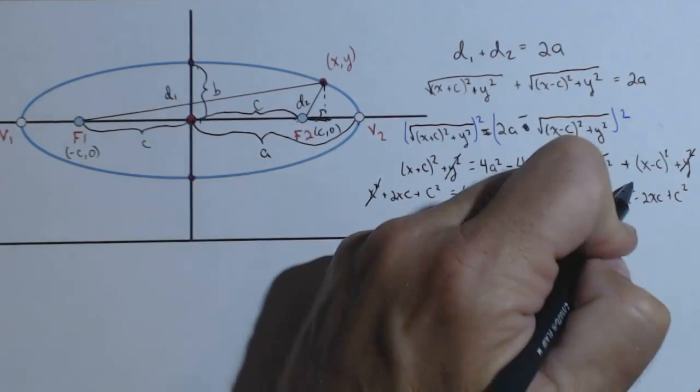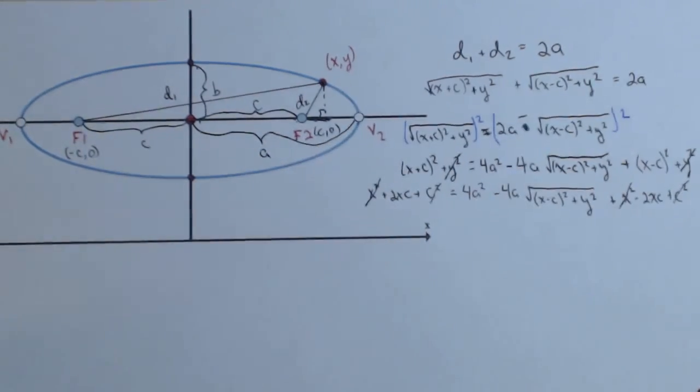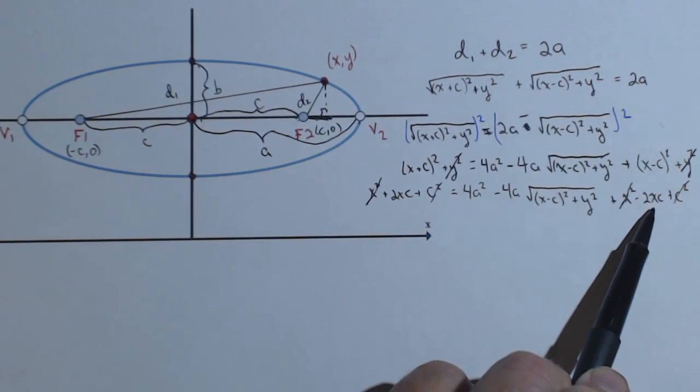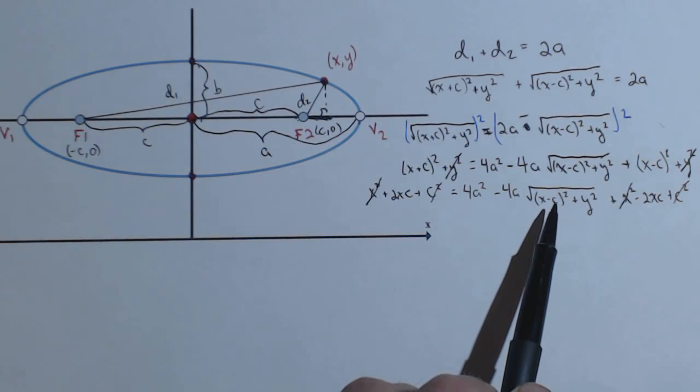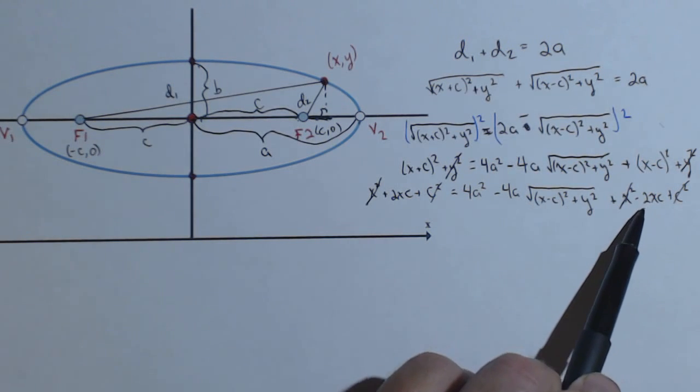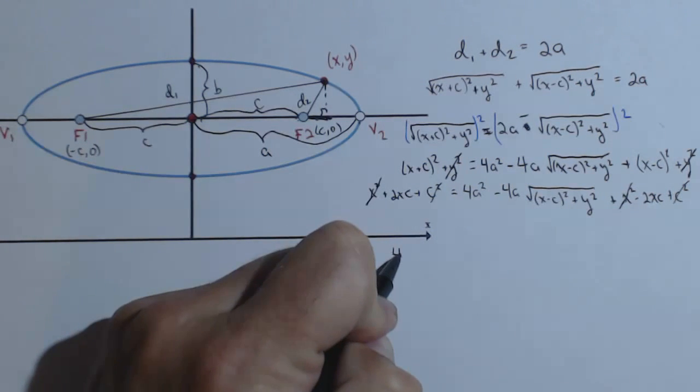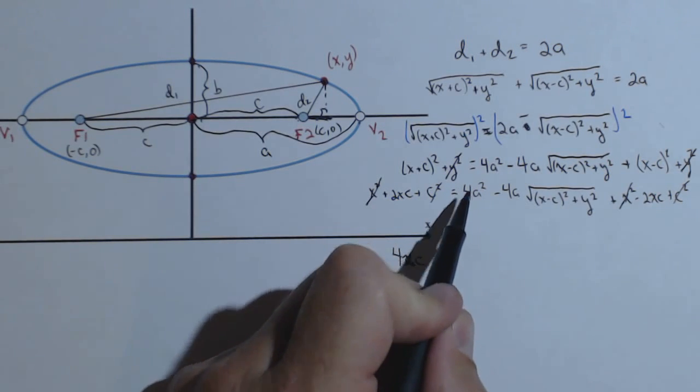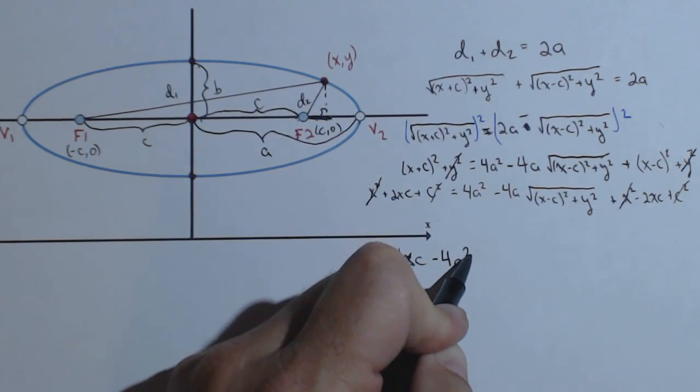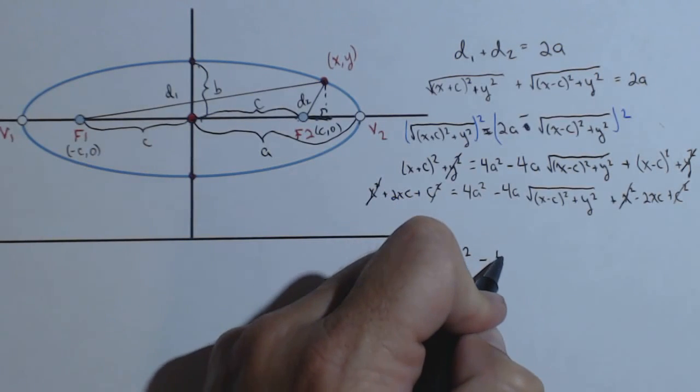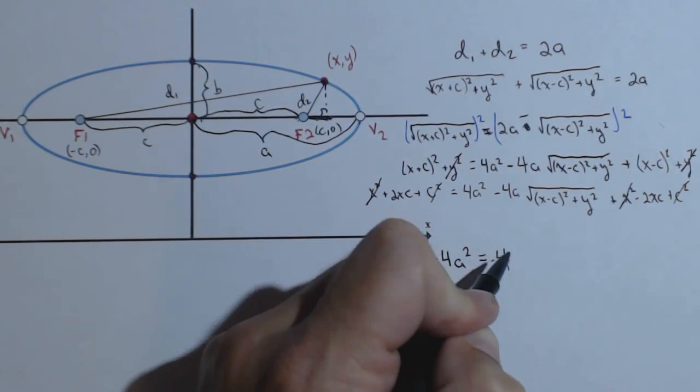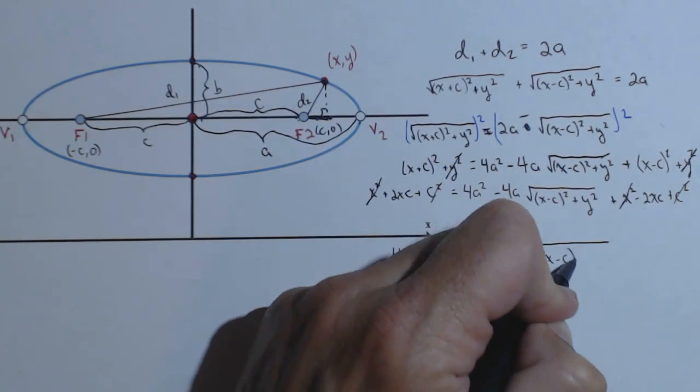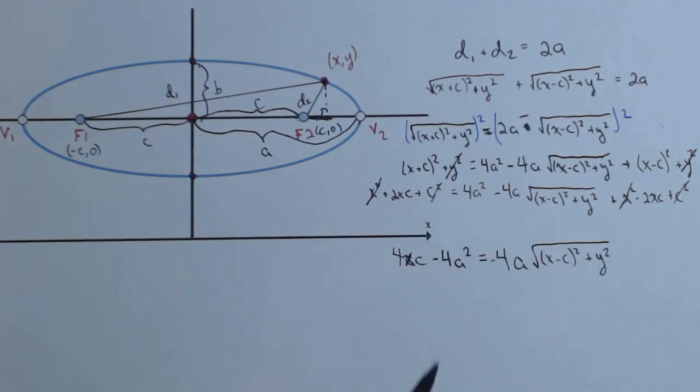Now, again, we're going to get to cancel out the X squared terms, and we'll get to cancel out the C squared terms. So, we're doing pretty well. What we're going to do is we're going to isolate this radical, and let's see what that looks like. So, first thing, I'm going to add 2XC to both sides. So, I'm going to have 4XC, and I'm going to subtract off the 4A squared equals a negative 4A times the square root of X minus C, the quantity squared, plus Y squared.